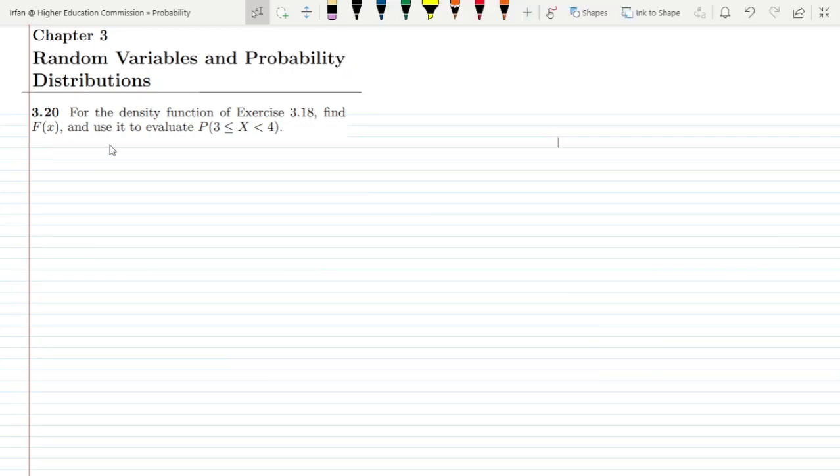This is question 3.20 of chapter 3 and the statement is for the density function of exercise 3.18, find F(x) which is basically the CDF and use it to evaluate P(3 ≤ x < 4).